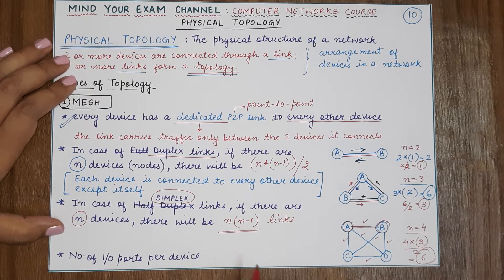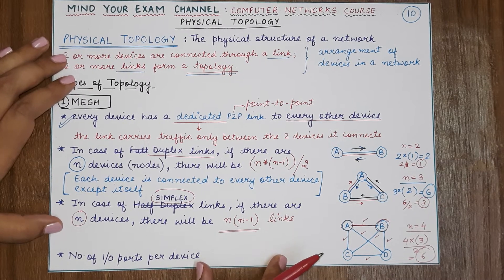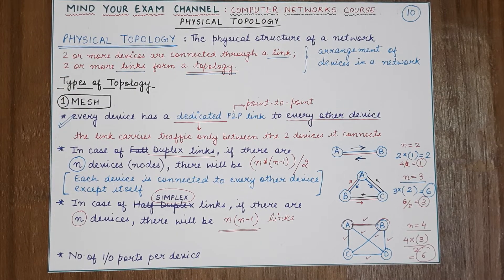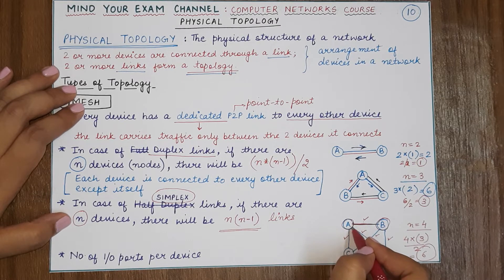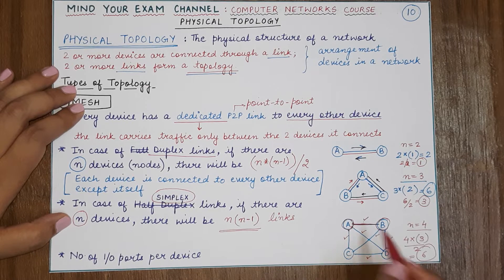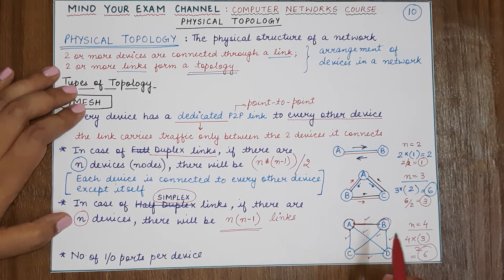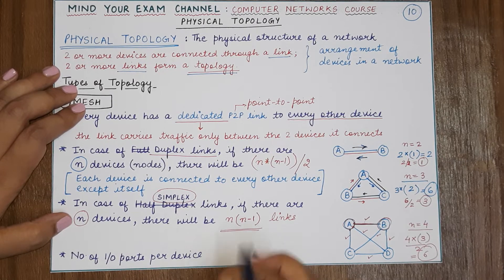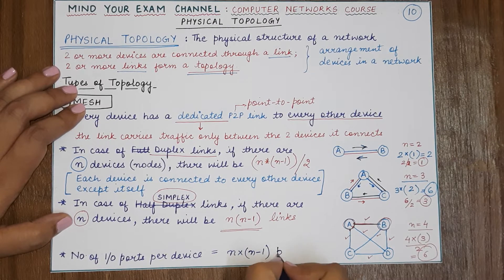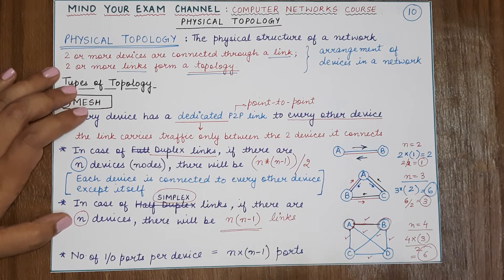Another important point to remember is the number of input-output ports required for each device. Input-output ports are the physical points into which the wires connecting devices are plugged in, in the case of wired connections. For each device, the number of input-output ports required is n into (n minus 1) ports.